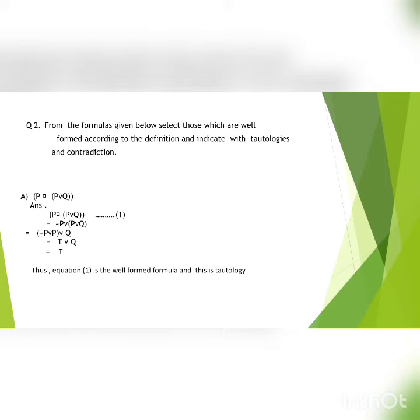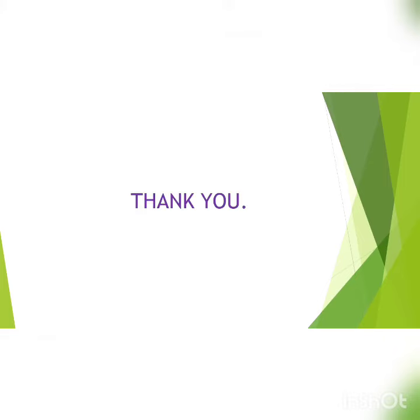Consider the first equation: P implies P or Q equals negation of P or P or Q, equals negation of P or P or Q, equals T or Q, equals T. Thus equation 1 is the well-formed formula and this is tautology.